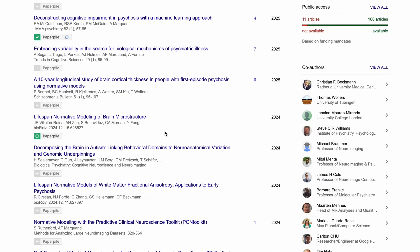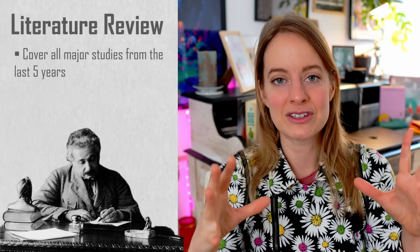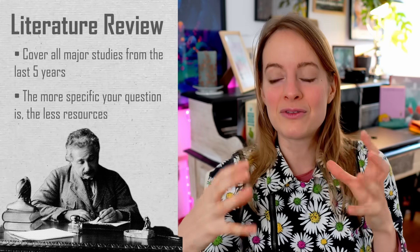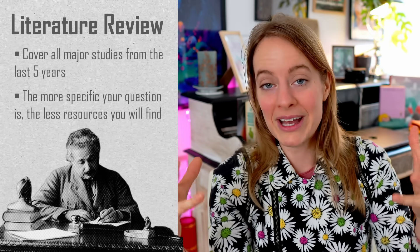In Google Scholar you can actually see which other papers cite a given paper, and you can also do that in Research Rabbit. With this literature review, you want to make it really wide — you basically don't want to miss any of the main papers from the last five years that address your research question. The more specific your question is, the fewer resources you will find, and that's actually a good thing because otherwise the knowledge network will explode.